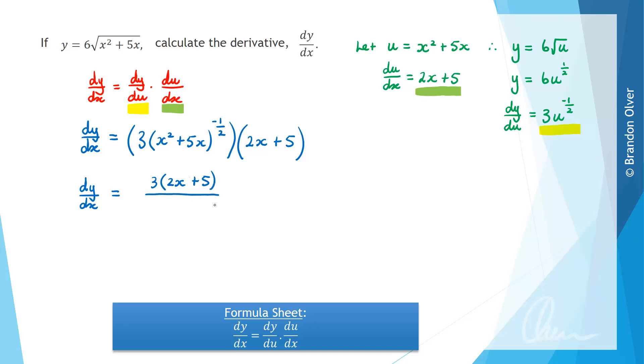and the negative will place the x squared plus 5x in the denominator, or on the bottom of a fraction, and the half will introduce a square root sign. So we could write this as divided by the square root of x squared plus 5x. So that is the derivative for this question.